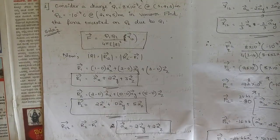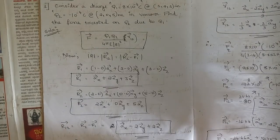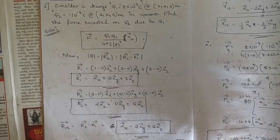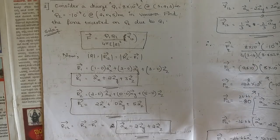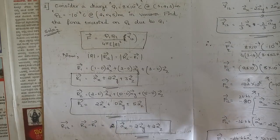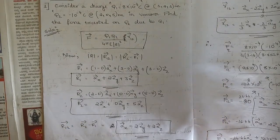Hello everyone. In this video we are going to discuss some important numerical problems which are going to appear in the exam of Electromagnetic Theory — BEC 401 for Electronics and Communication Engineering students. In the last video we discussed important concepts from all modules 1 to 5. In this video we are going to discuss possible numerical problems which might appear in the exam from module 1 to module 5.